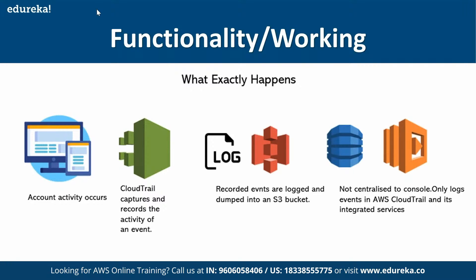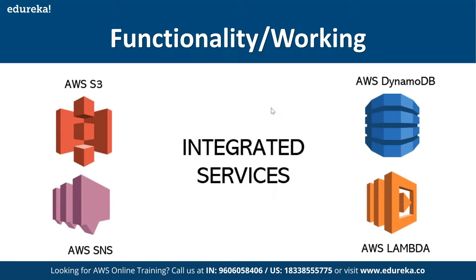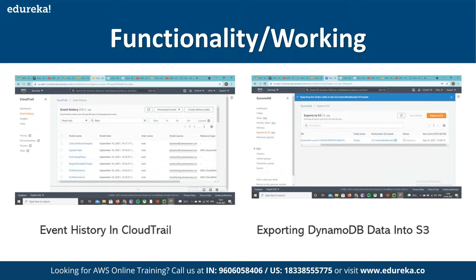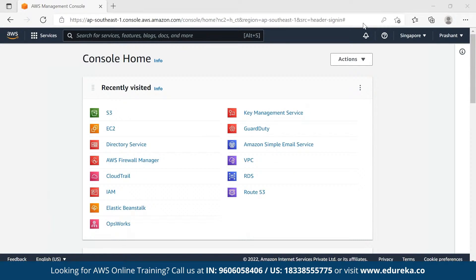Moving ahead to integrated services — you can integrate CloudTrail with different AWS services. For example: a user logs into the AWS console — that's one event. A user then creates a table in DynamoDB — that's the second event. These activities are recorded and stored as logs in CloudTrail automatically. The logs are stored in event history and can be viewed by the user.